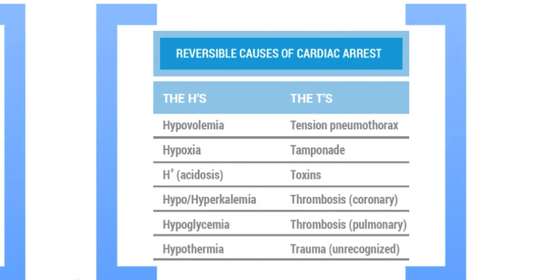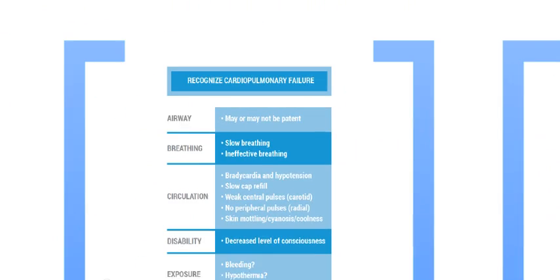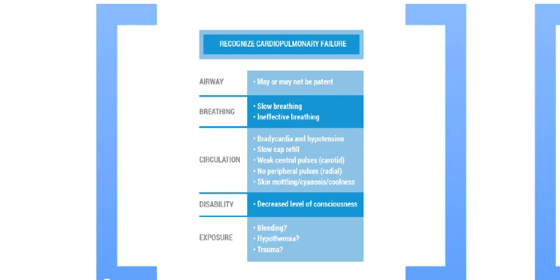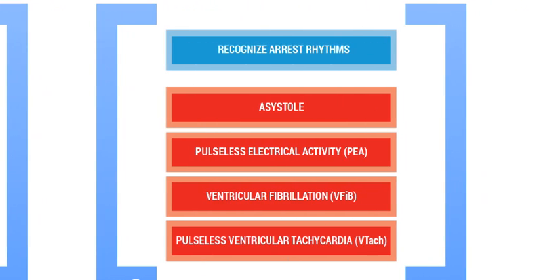Here is a chart of reversible causes of cardiac arrest. When recognizing cardiopulmonary failure, assess the airway, breathing, circulation, disabilities, and exposure. Recognize arrest rhythms including asystole, pulseless electrical activity, ventricular fibrillation, and pulseless ventricular tachycardia.